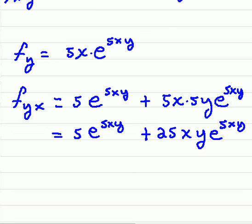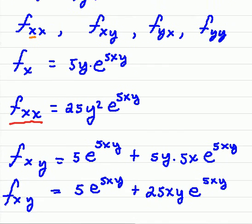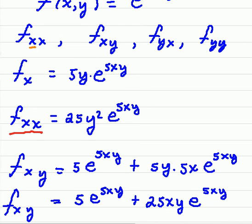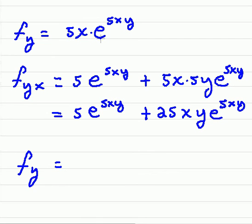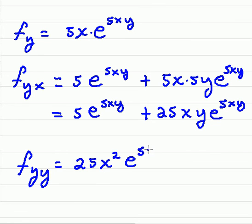We have one more: the second partial f_yy. We already have f_y from our earlier work. Now we take the derivative of that again with respect to y. The derivative of y is 1, so we bring the 5x out front, and that becomes 25x squared times e to the 5xy.